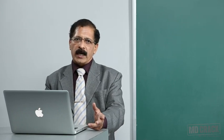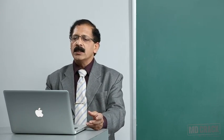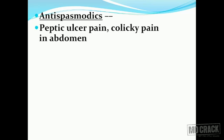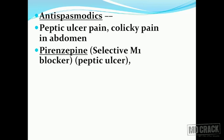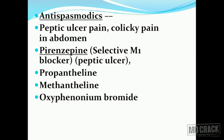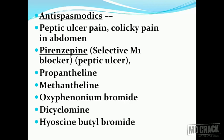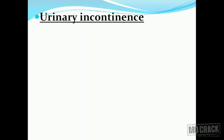The atropine substitutes can be grouped by use. The first group is antispasmodics. The action of atropine is to relax smooth muscle, so these antispasmodics are useful in pain due to peptic ulcer and colicky abdominal pain. One important agent is pirenzepine, which is a selective M1 blocker useful in peptic ulcer. You also have propantheline, methantheline, oxyphenonium bromide, dicyclomine, and hyoscine butyl bromide - all important and frequently used for colicky pains.